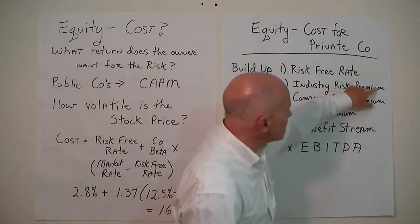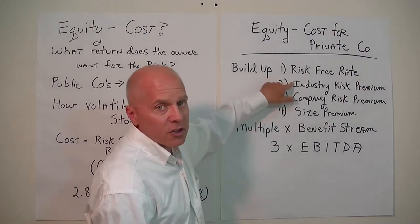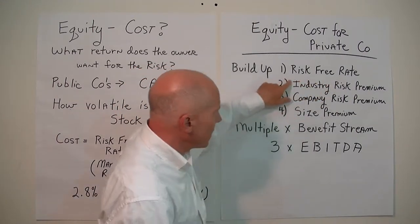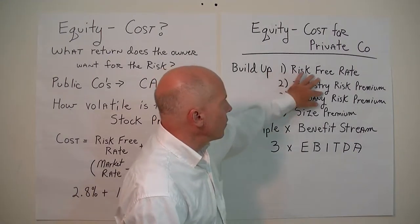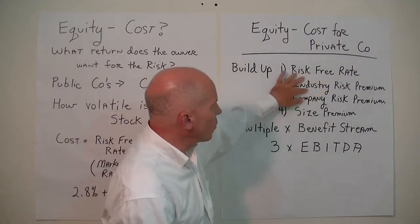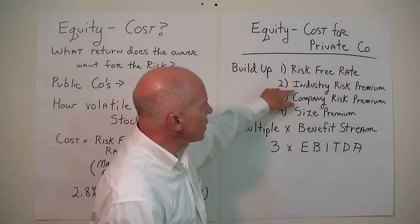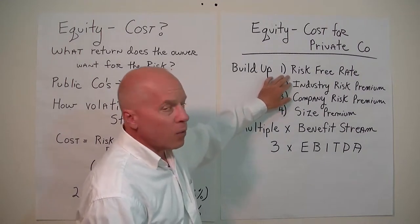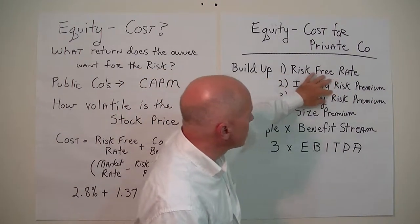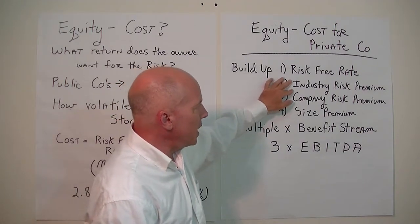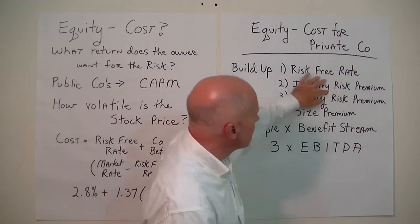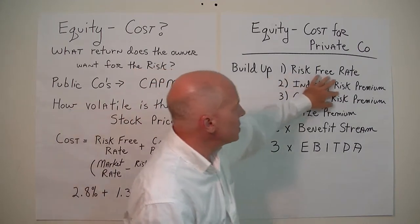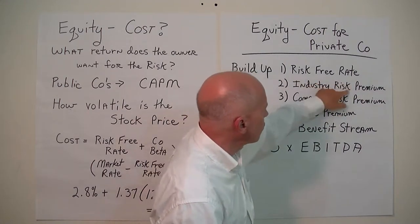Different industries will have different risk premiums. Industries are partly a function of barriers to entry — if it's extremely easy to enter an industry, barriers are low and you'll have a lot of competition; if barriers are difficult, you'll have less competition. Software companies tend to have rather high risk premiums because of competition and innovation, whereas banks and utility companies are more stable. The barriers to start a utility company are extremely high, so there's not much competition, meaning a lower risk premium.